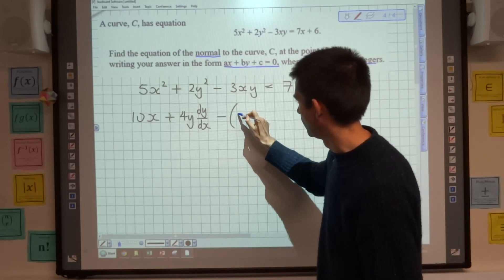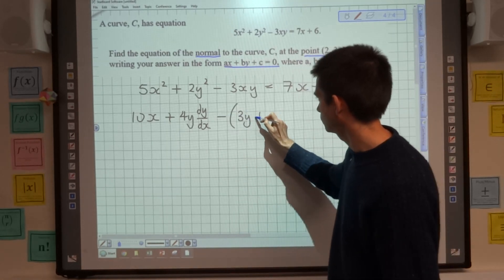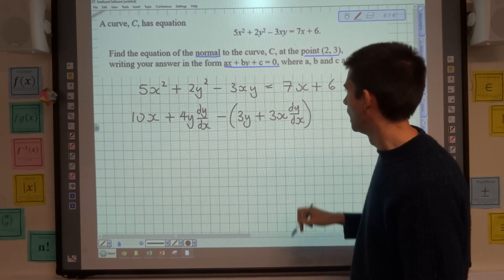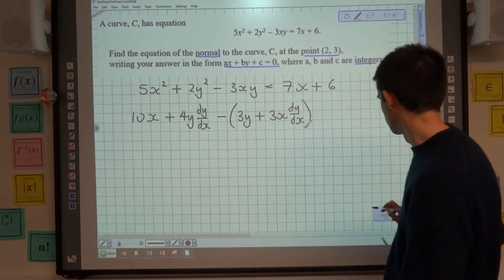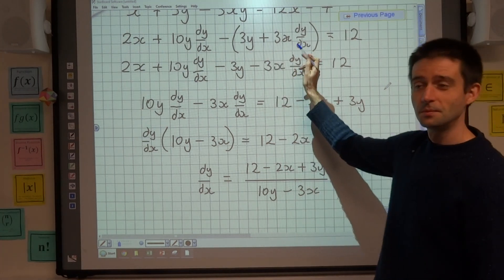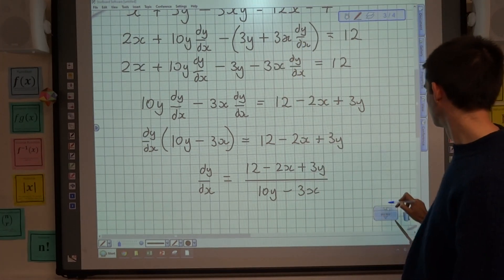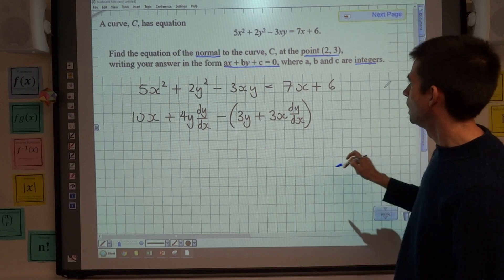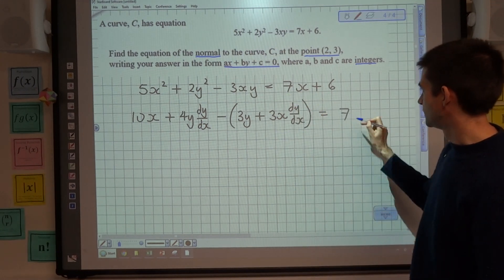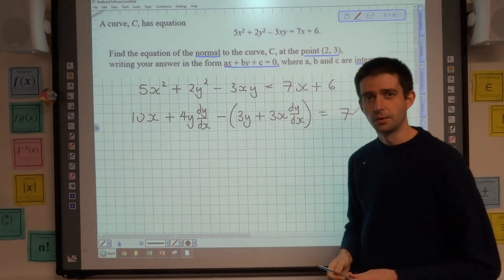And then that's going to be minus, in a bracket, 3y + 3x dy/dx, just as it was in the previous example, which I've got saved there. Looking at the right-hand side now, 7x will differentiate to 7, and the constant term 6 will differentiate to 0.